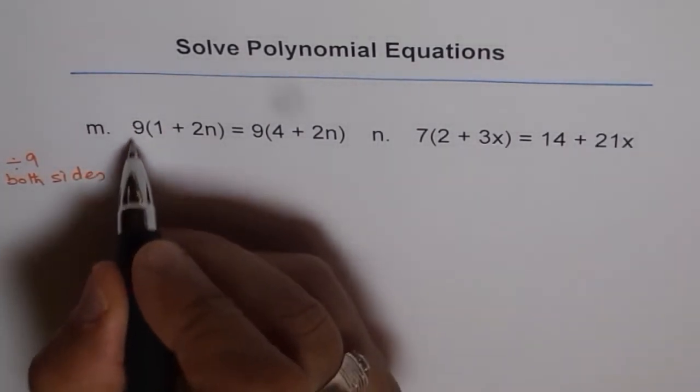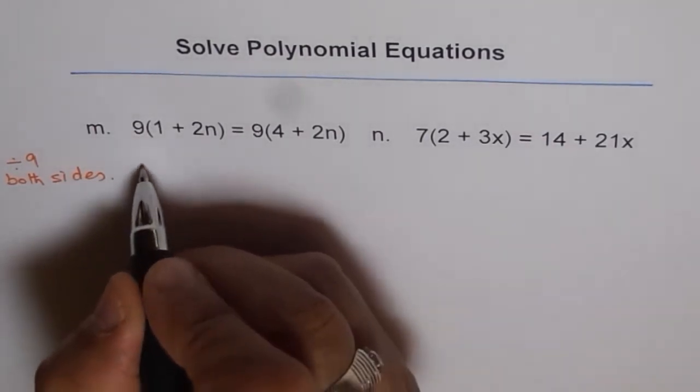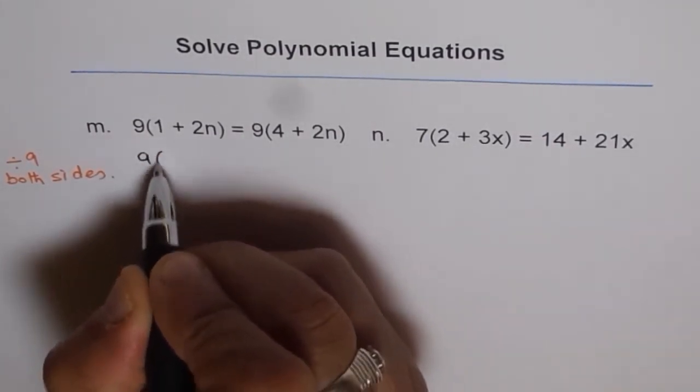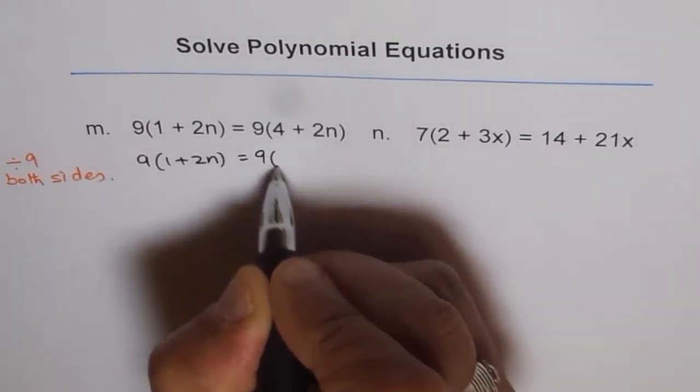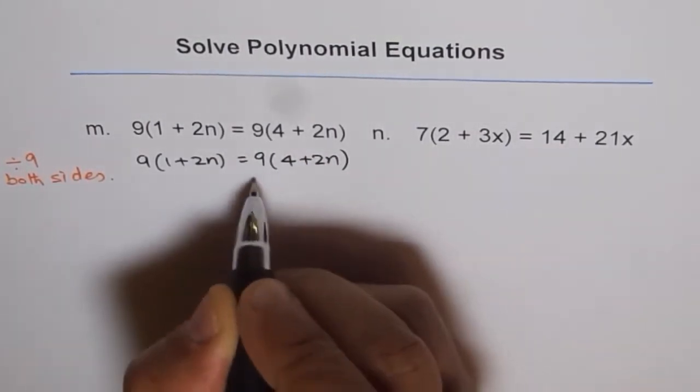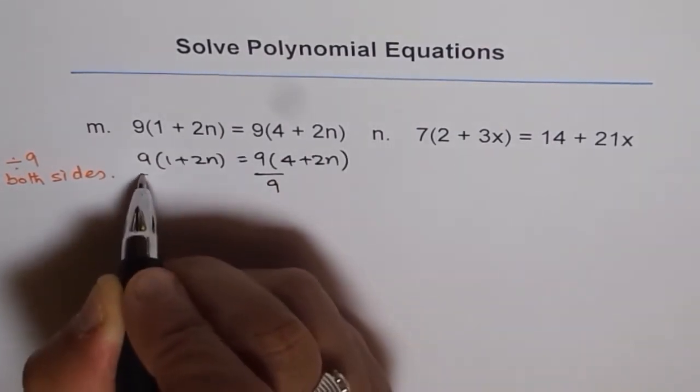And if we do that we get 9 over 9 as 1, right? So let me write that once for you. So the equation is 1 plus 2n equals to 4 plus 2n. Now we are dividing by 9 on both the sides.